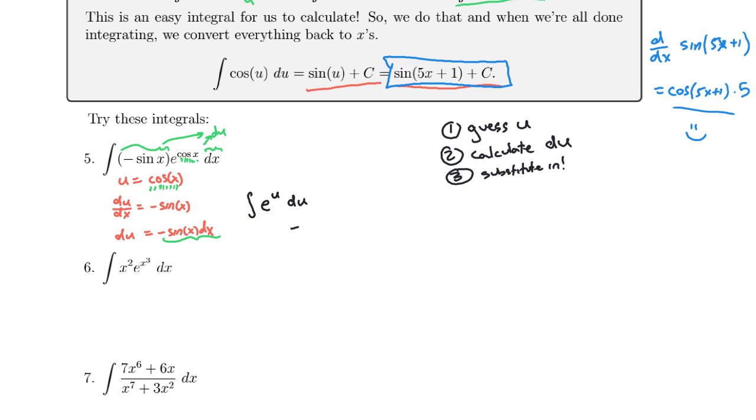The antiderivative of the exponential function is just the exponential function again, plus c. And so that becomes e to the cosine of x plus c. And there we go.